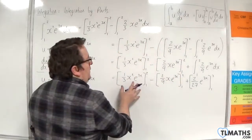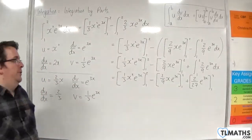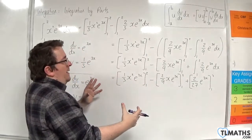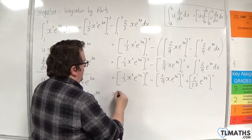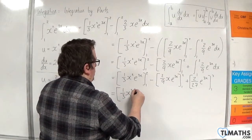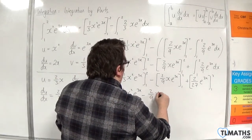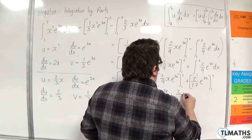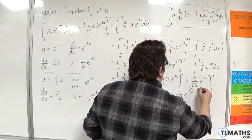Now you could evaluate each of these separately, but I would strongly recommend against that. Instead, bring them all into a single square bracket — you can do this because the limits of each term are the same. So we'll have 1 third x squared e to the 3x, take away 2 ninths x e to the 3x, plus 2 over 27 e to the 3x, all evaluated between 1 and 2.